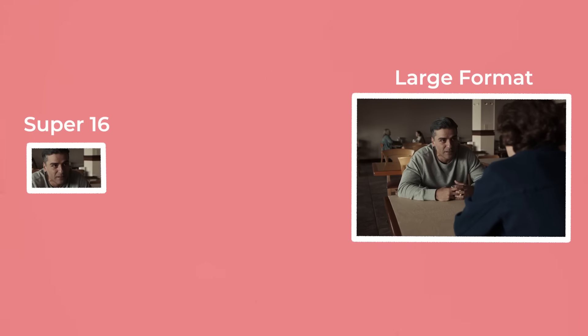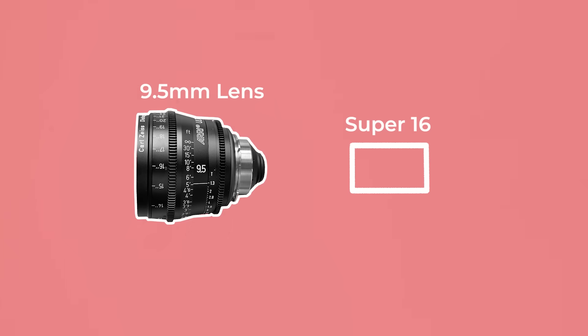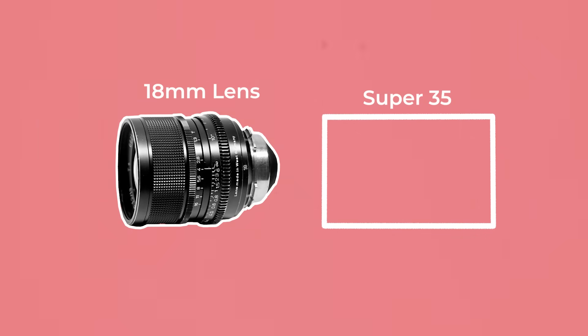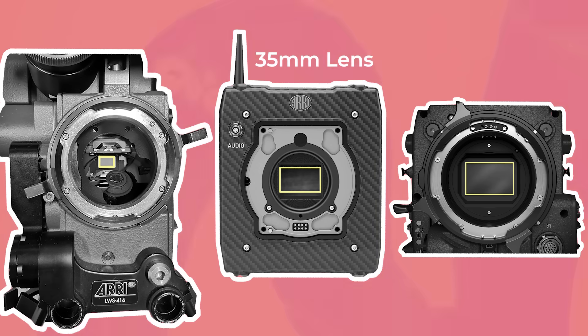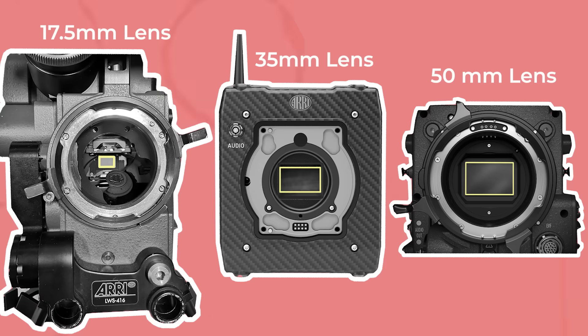To compensate for the field of view differences, smaller formats like Super 16 need to use wider angle lenses to get an image that sees the same amount of information, while larger formats need to use longer lenses for that same frame. For example, to get the same field of view from a 35mm lens on a Super 35 sensor, a Super 16 camera needs to use a 17.5mm focal length, and a large format full frame camera needs to use a 50mm focal length.